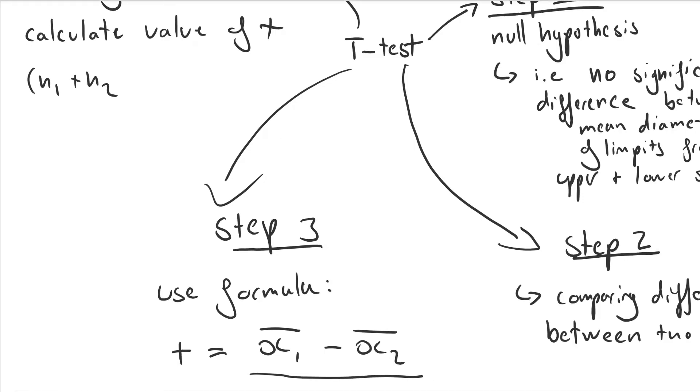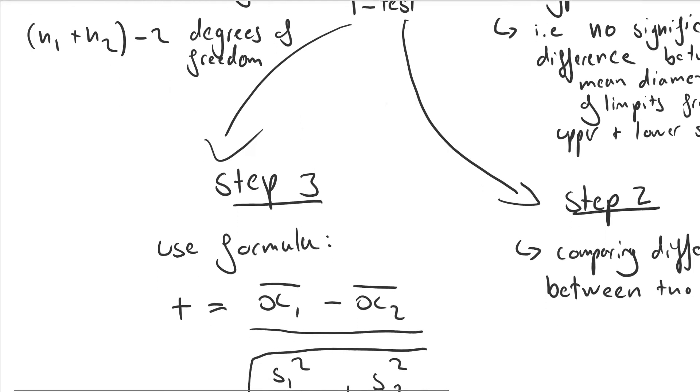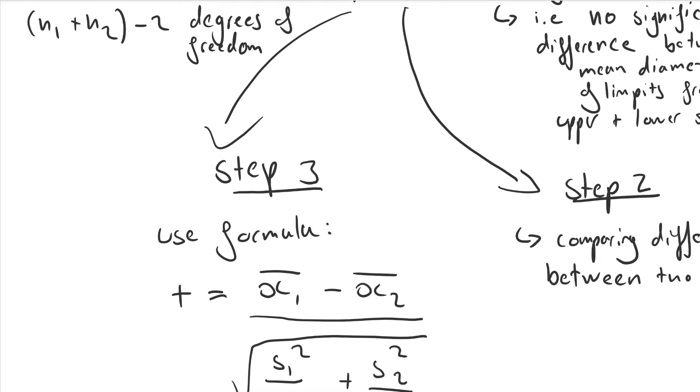And at 22 degrees of freedom, for our example, the probability of the limpet being less than 0.1% probability is 3.792.